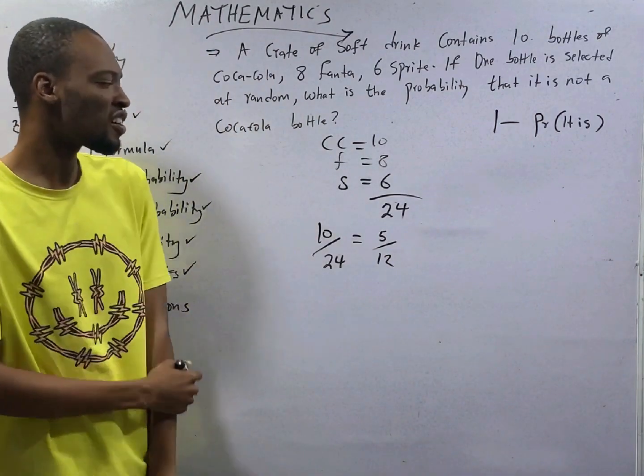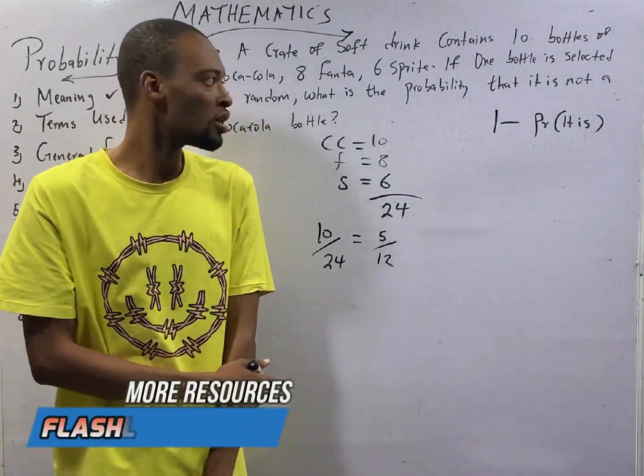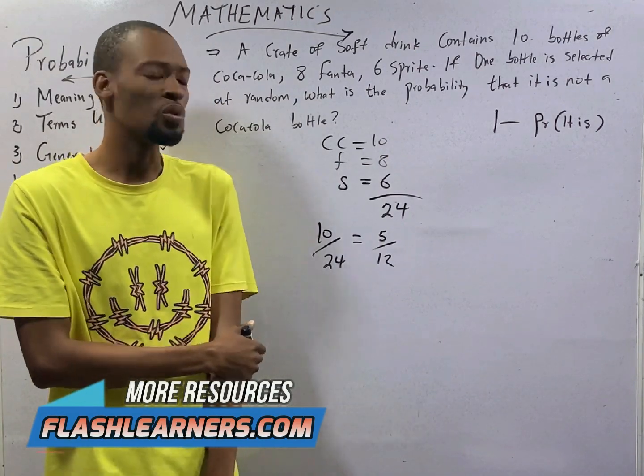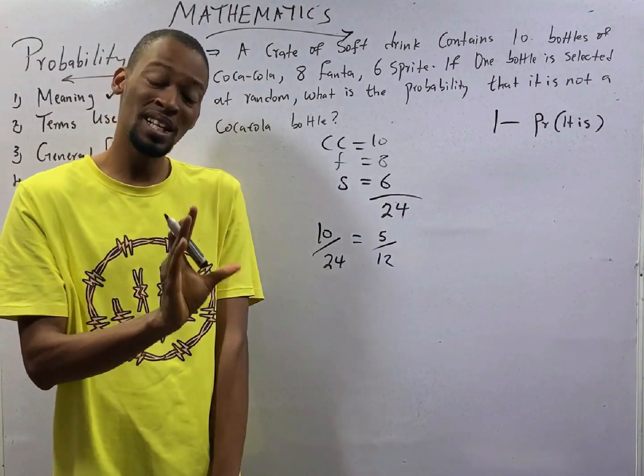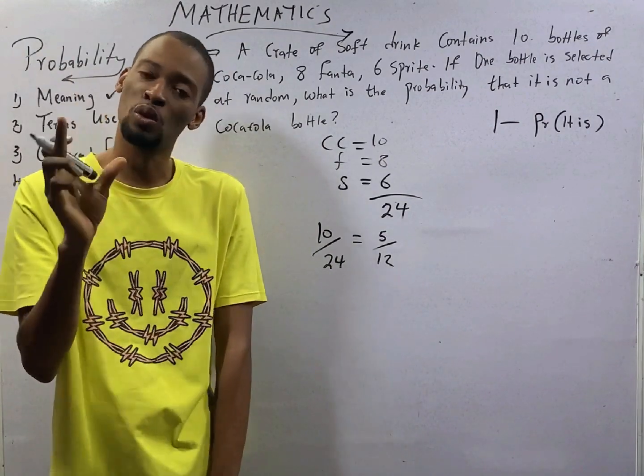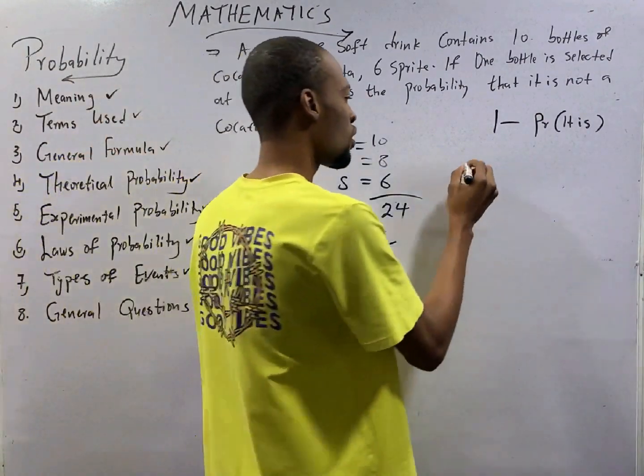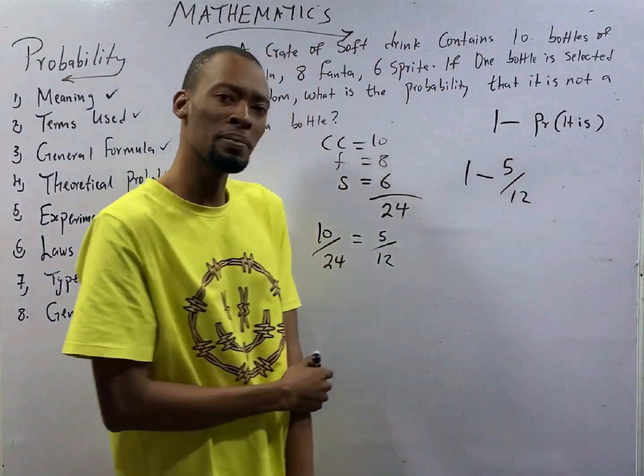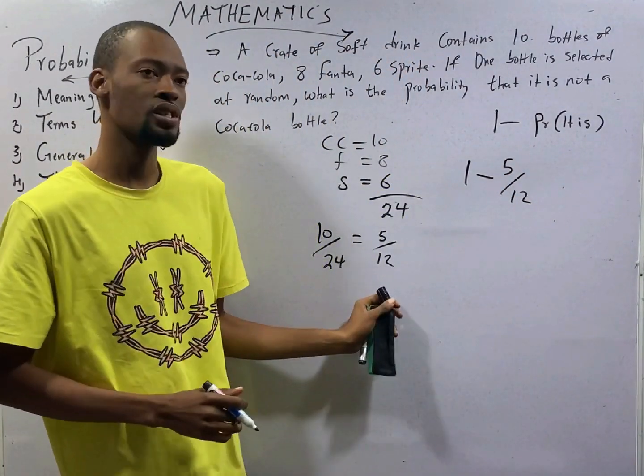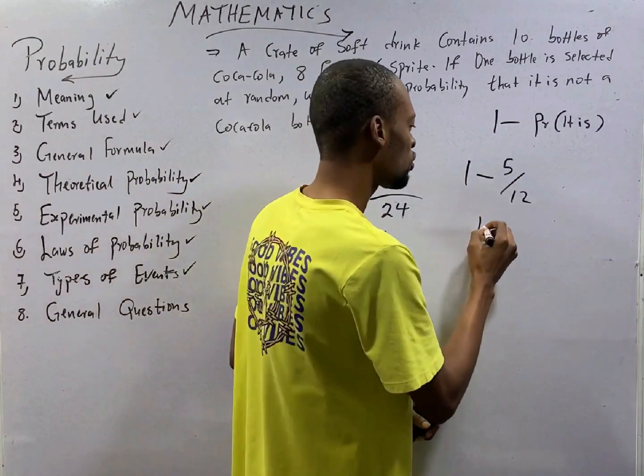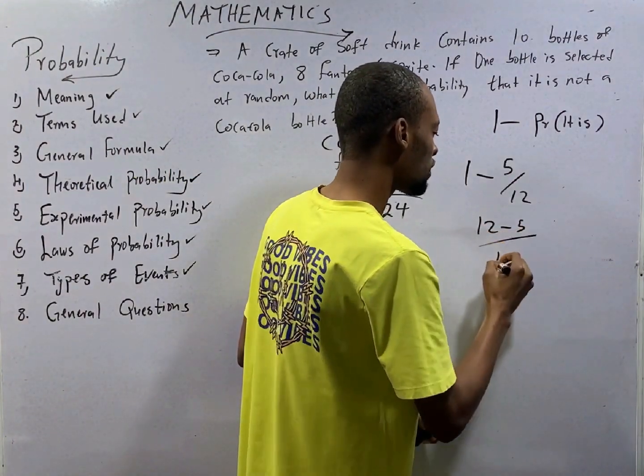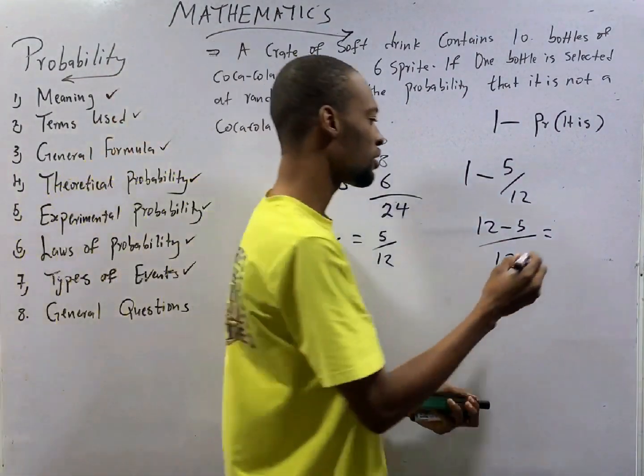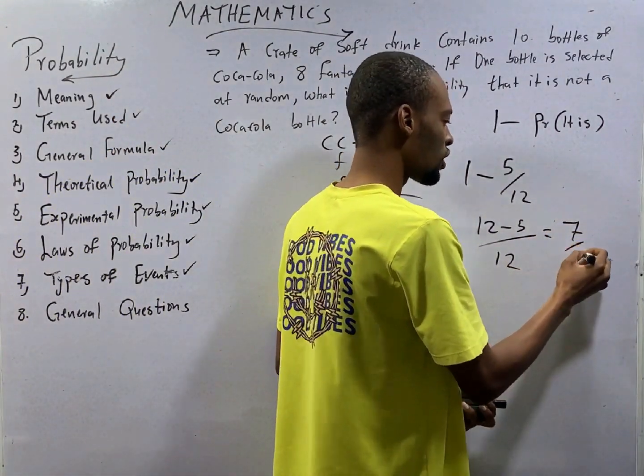This is the chance of picking a Coca-Cola bottle. So we are not asked for the probability that it is a Coca-Cola bottle. We are looking for the probability that it is not a Coca-Cola bottle and that is 1 minus 5 over 12, 1 minus probability that it is. And this should give you 12 minus 5 over 12. And ladies and gentlemen, if I am correct, it should give me 7 over 12.